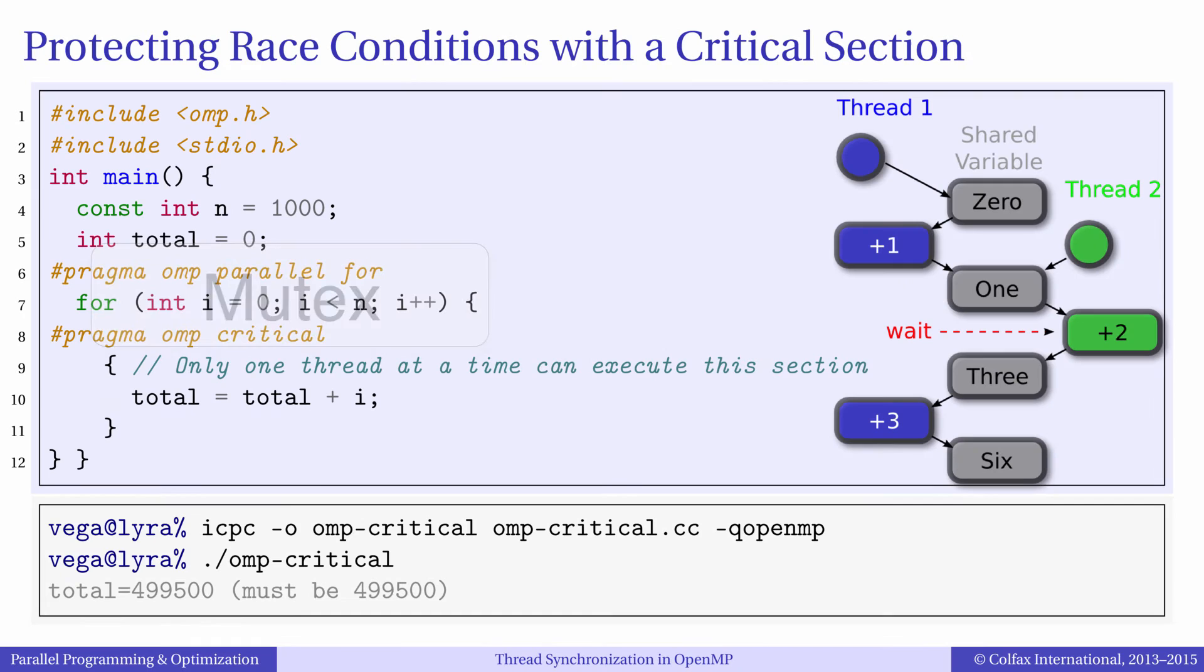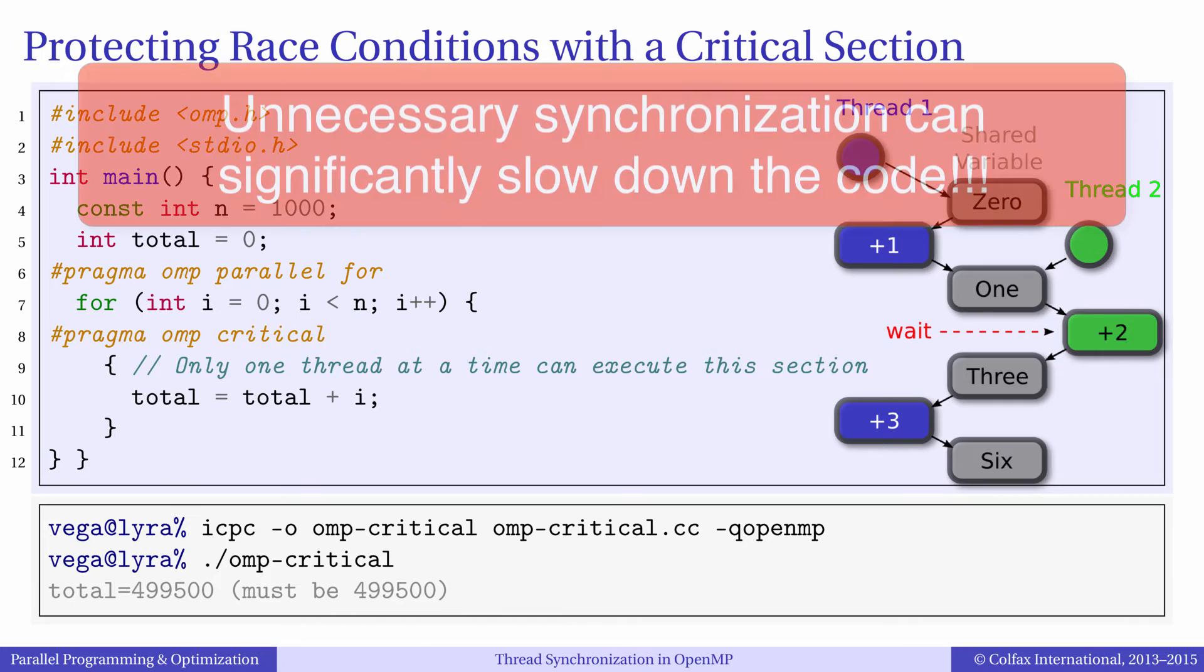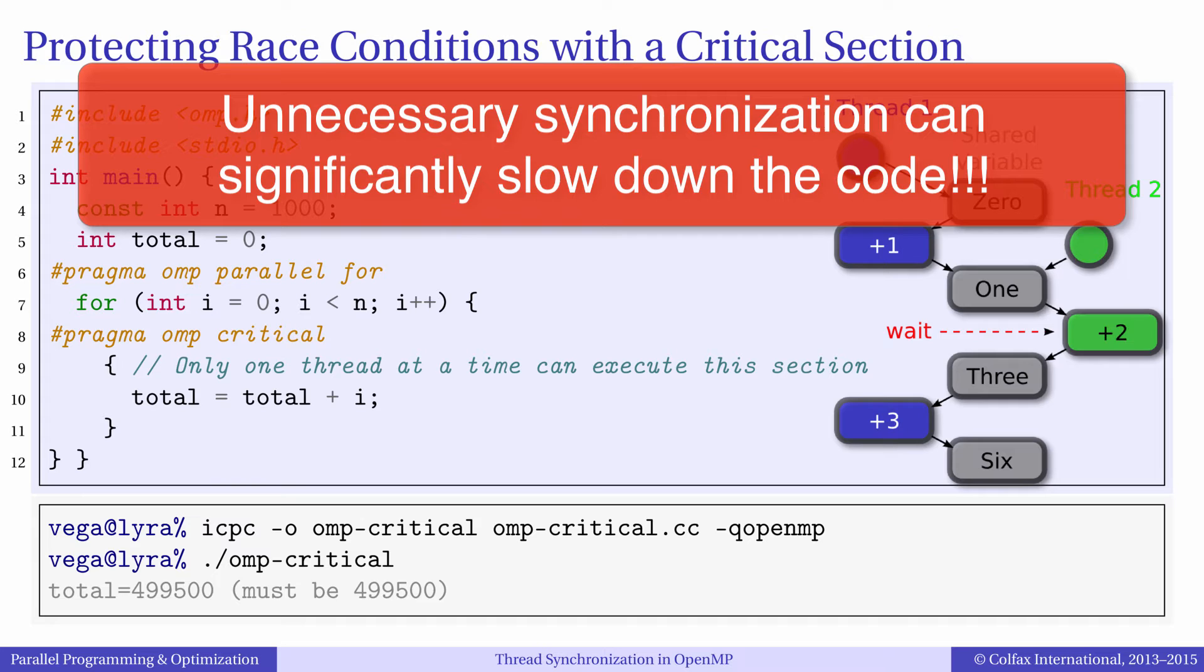In some situations mutexes are the only way to make a parallel application with race conditions produce correct results. However, if used incorrectly mutexes can have a negative effect on performance. We will discuss this in more detail in this and the next episode where we will talk about parallel reduction.